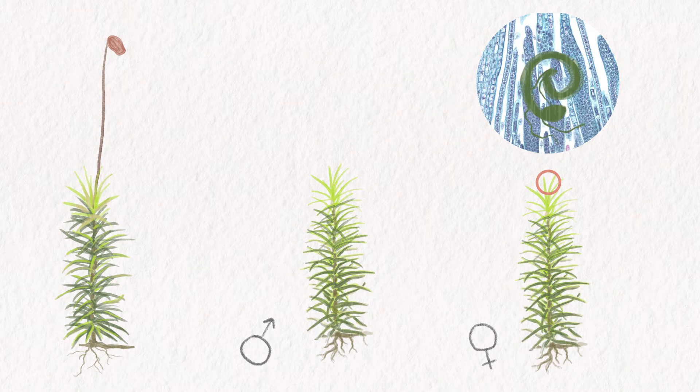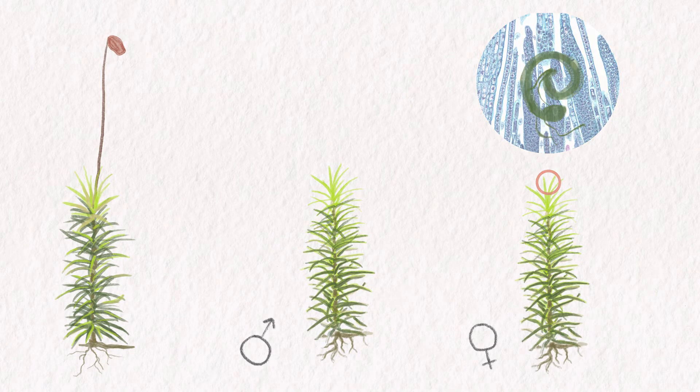Once an egg in the archegonia is fertilized, a new sporophyte begins to grow right out of the tip of the female gametophyte. This completes the cycle of alternation of generations.